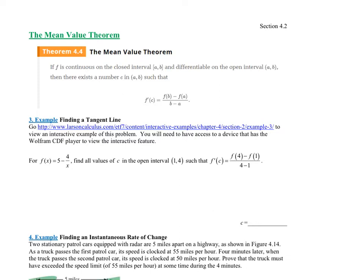Here's the idea. With Rolle's Theorem, you had to be continuous on the closed interval and differentiable on the open interval. That hasn't changed. But with Rolle's Theorem, very specifically, your endpoints had to have the same value. With the Mean Value Theorem, your endpoints do not need to have the same value. So the Mean Value Theorem is actually stronger than Rolle's Theorem. Rolle's Theorem is now a corollary — a subset, a very specific case of the Mean Value Theorem.